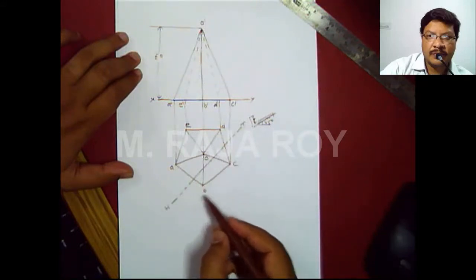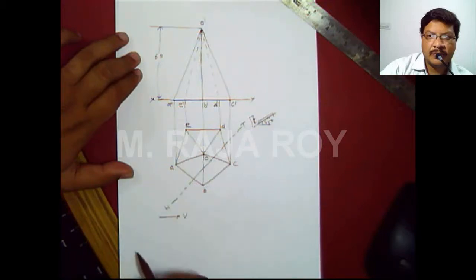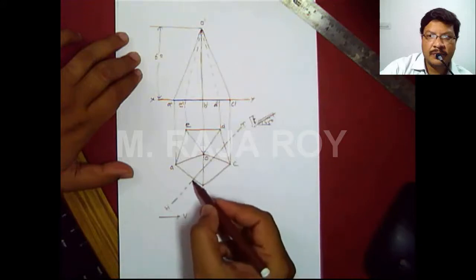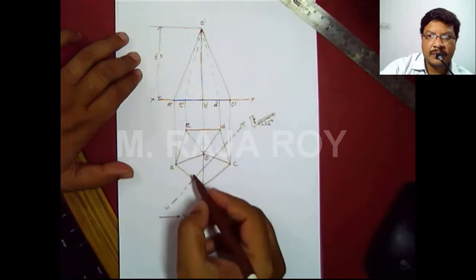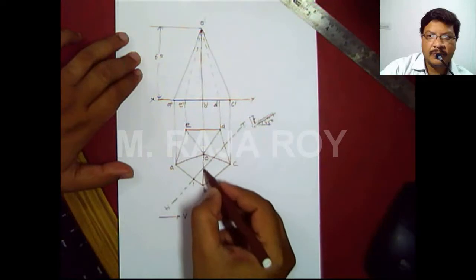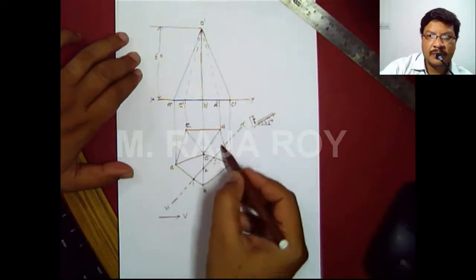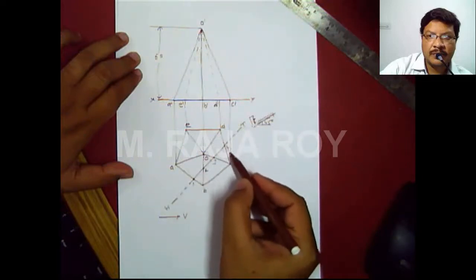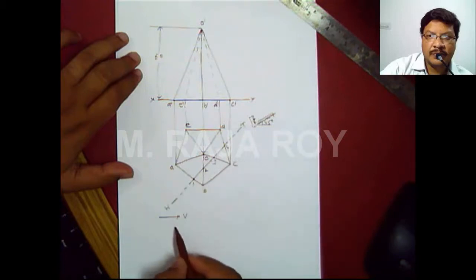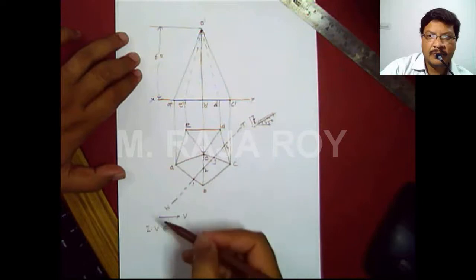After drawing the section plane, identify the cutting points by moving from left to right and giving names to visible cutting points. The cutting plane cuts base edge AB — this is the first intersection point, called 1. Next it cuts slant edge OB — that is point 2. Next it cuts slant edge OC — that is point 3. Next the section plane cuts base edge CD — this is point 4. All are visible. Moving in the opposite direction, there are no invisible edges in this problem, so no additional points are obtained.